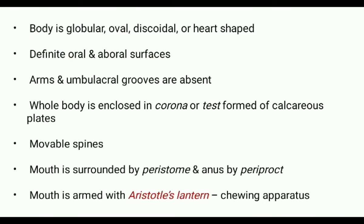About the salient features of the Class Echinoidea: their body is globular, oval, discoidal, or heart-shaped, and they have definite oral and aboral surfaces. Arms and ambulacral grooves are absent in Class Echinoidea. Their whole body is enclosed in a shell called the corona or test, which is formed of calcareous plates.